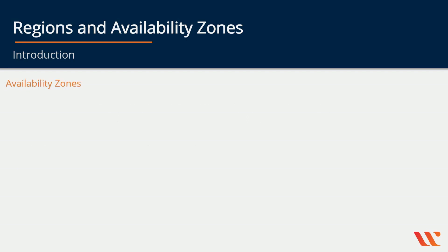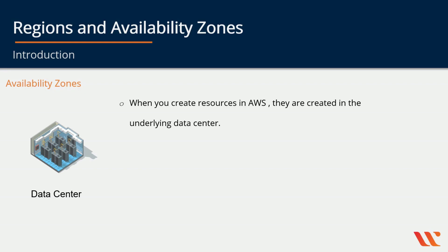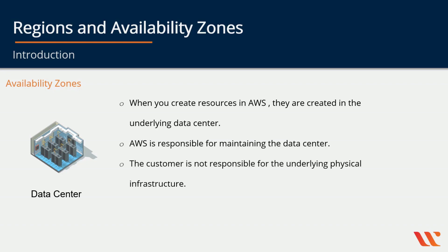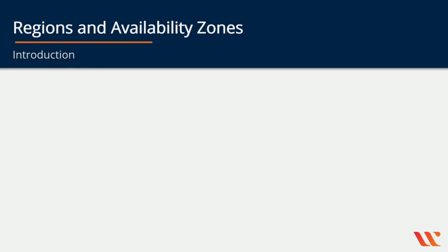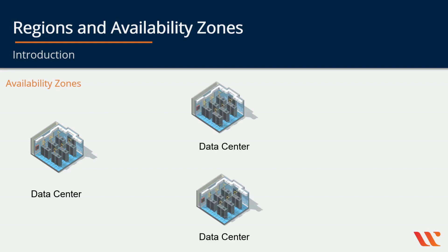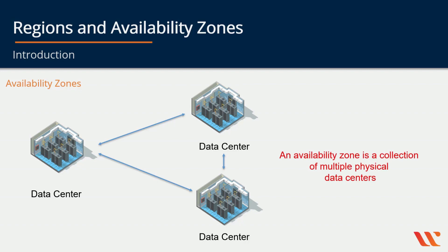Next, we come to availability zones. When you create resources in AWS, they are created in the underlying data center. AWS is responsible for maintaining the data center, and the customer is not responsible for the underlying physical infrastructure. The entire data center — the cooling, the power, the security — everything is the responsibility of AWS. AWS has multiple data centers, and they have grouped these physical data centers into something known as an availability zone.